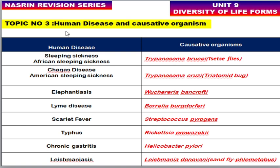At least one question will be asked from this topic in the exam, often in match-the-following format. Scarlet fever is caused by Streptococcus pyogenes. Typhus is caused by Rickettsia prowazekii. Chronic gastritis is caused by Helicobacter pylori. Leishmaniasis, also called black fever or kala-azar, is caused by Leishmania donovani, and the vector is the sandfly belonging to Phlebotomus.